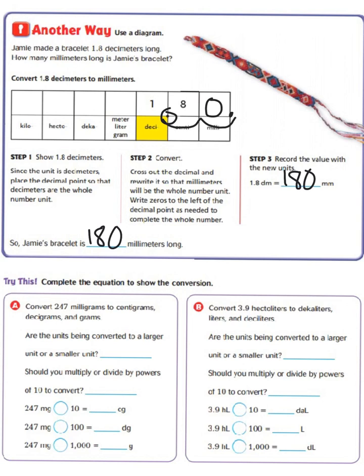So now we're going to try this, complete the equation to show the conversion. We're going to convert 247 milligrams to centigrams, decigrams, and grams. Are the units being converted to a larger unit or a smaller unit? In all these cases it's going to be converted to a larger unit. Should you multiply or divide by powers of 10 to convert? Well since you're going from a smaller unit to a larger unit you are going to divide.